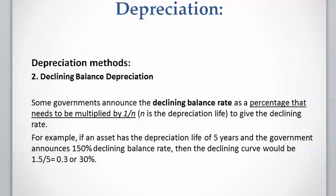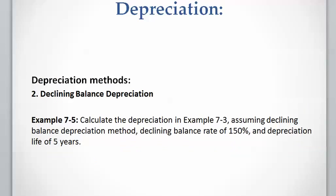Some countries announce the declining balance rate as a percentage that has to be divided by the depreciation life n to calculate the declining rate per year. For example, if an asset can be depreciated over a lifetime of five years and the government announces 150% declining balance rate, you divide 150% by five to calculate the declining rate per year.